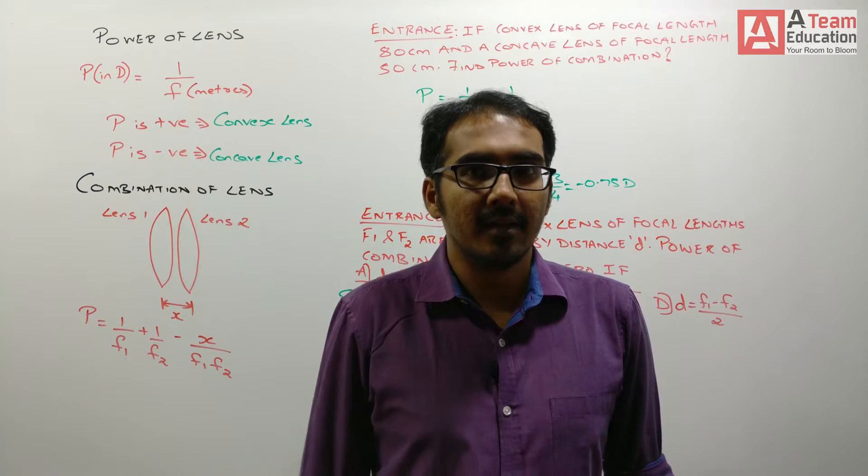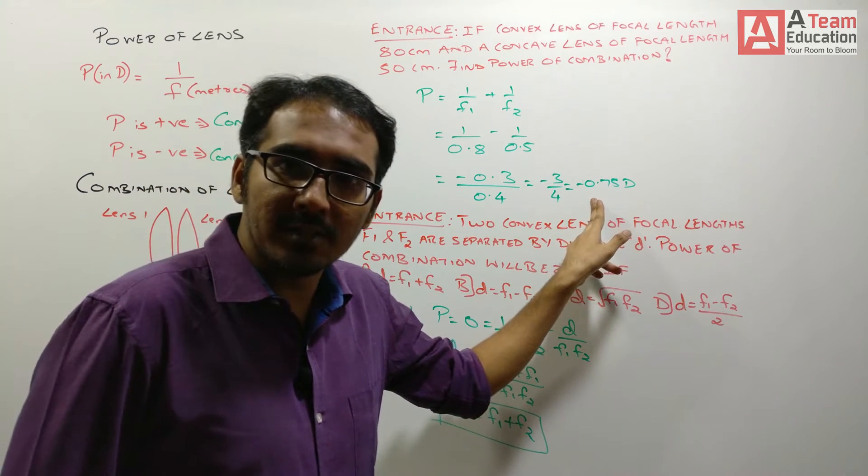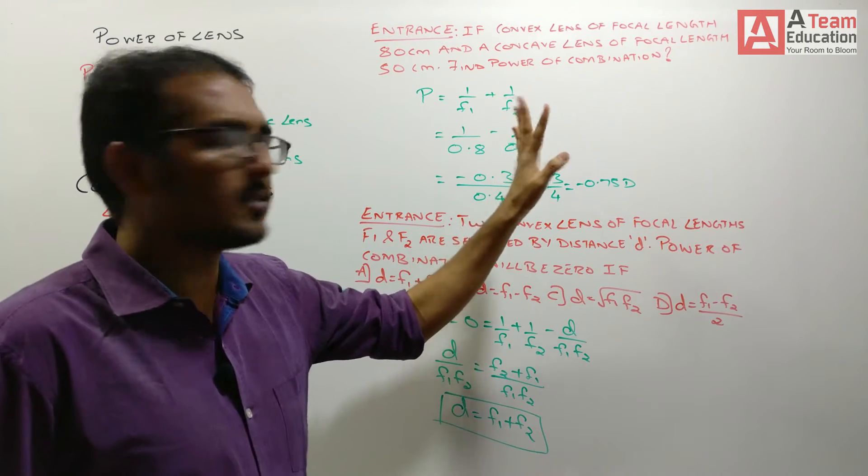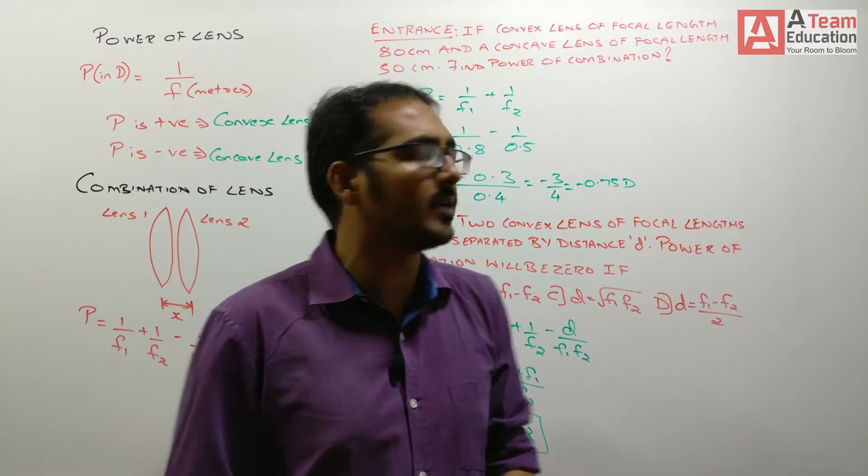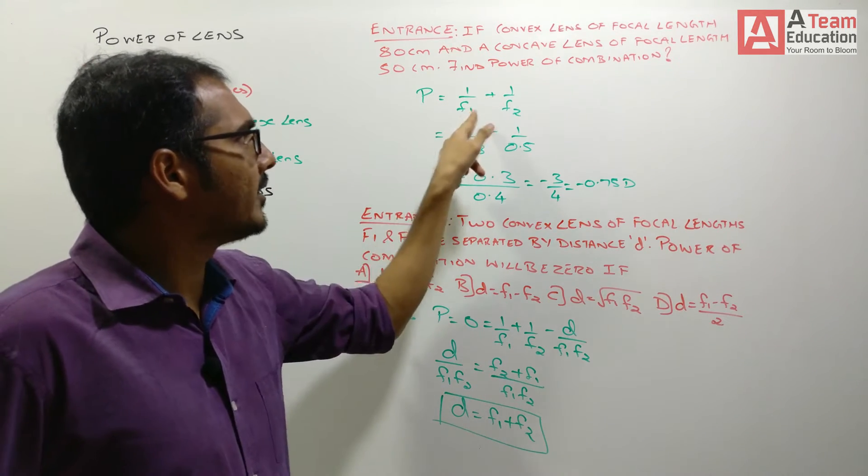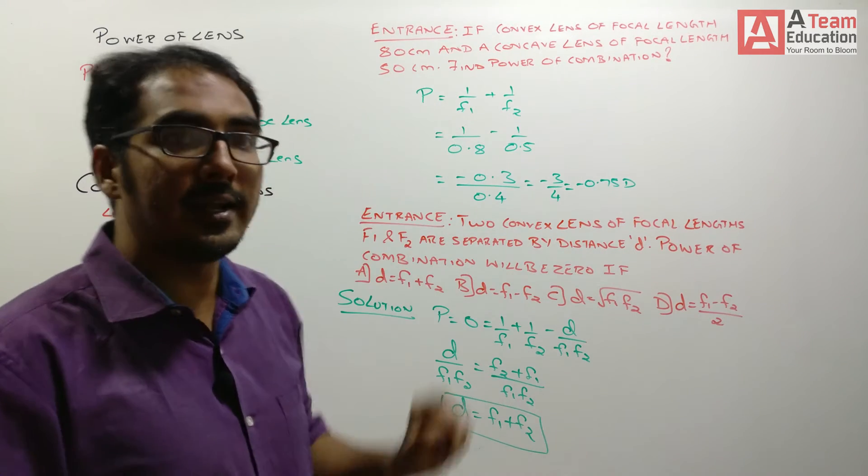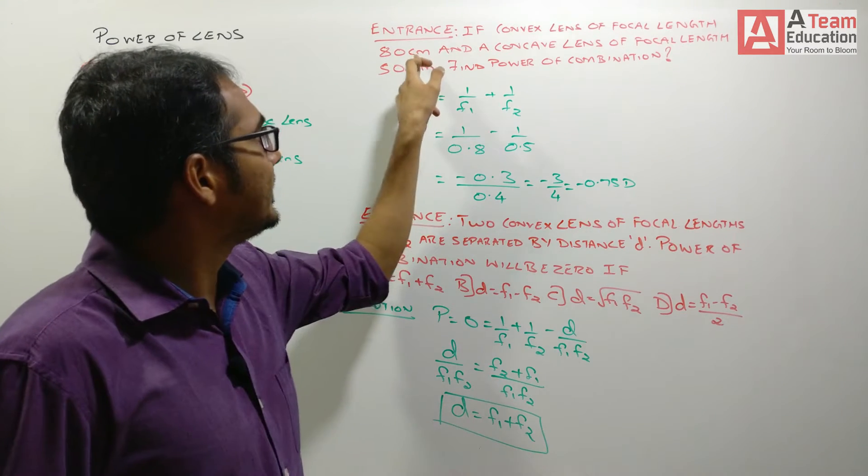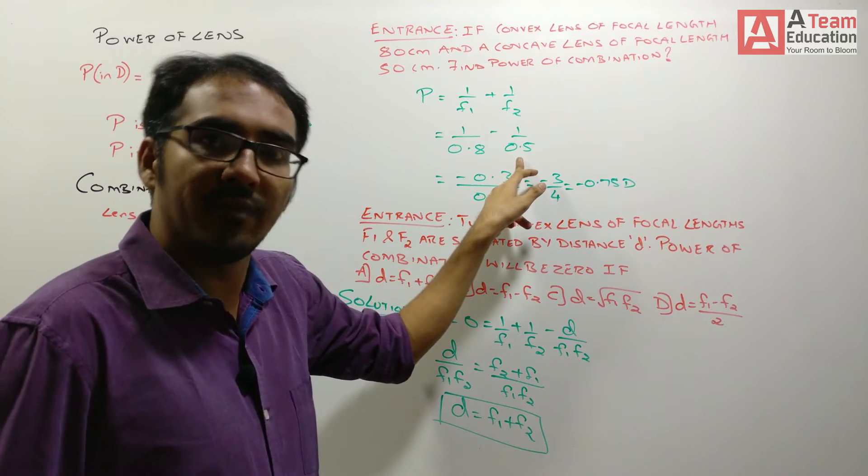Welcome back. So, answer is minus 0.75 diopters. If answer is very good, let us discuss it. Here we don't have a distance of separation so we don't have to worry about it. Power would be 1 upon f1 plus 1 upon f2. What we need to worry? First of all focal length is in centimeter and we'll convert to meters. 80 cm will become 0.8 meters, 50 cm will become 0.5 meters.